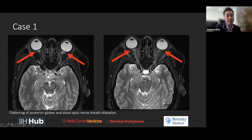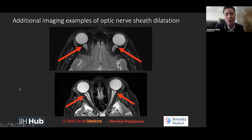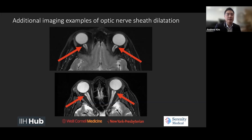So the CSF space is sort of distended distally there. Here are other imaging examples of optic nerve sheath dilatation in other patients with proven IIH. You can see that there are varying looks to it.